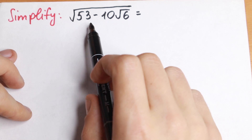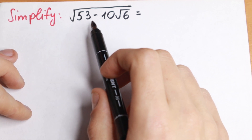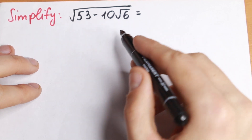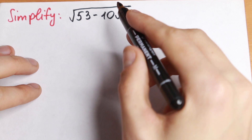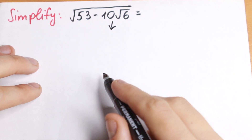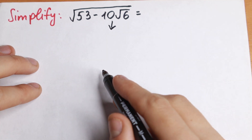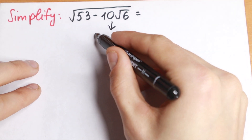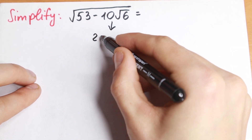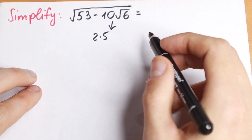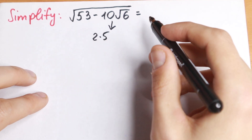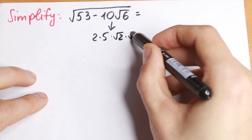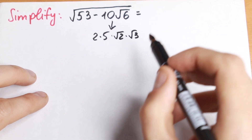This first number, 53, is not good — we cannot write it as a product of two numbers. But we have a really good case with the other part. 10√6 is really good to write: 10 can be written as 2 times 5, and √6 can be written as √2 times √3.